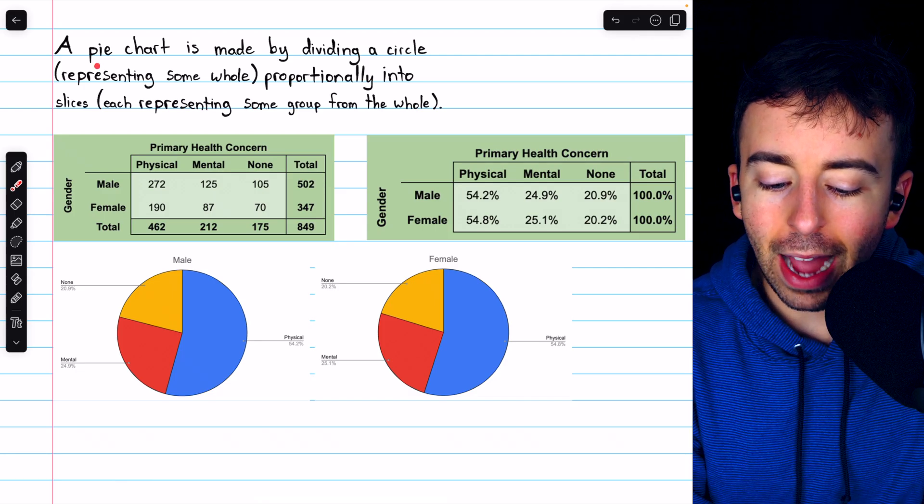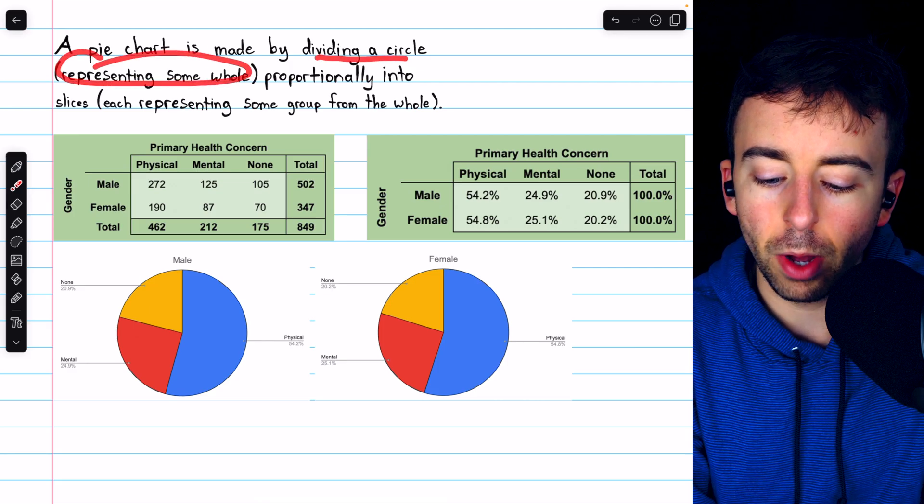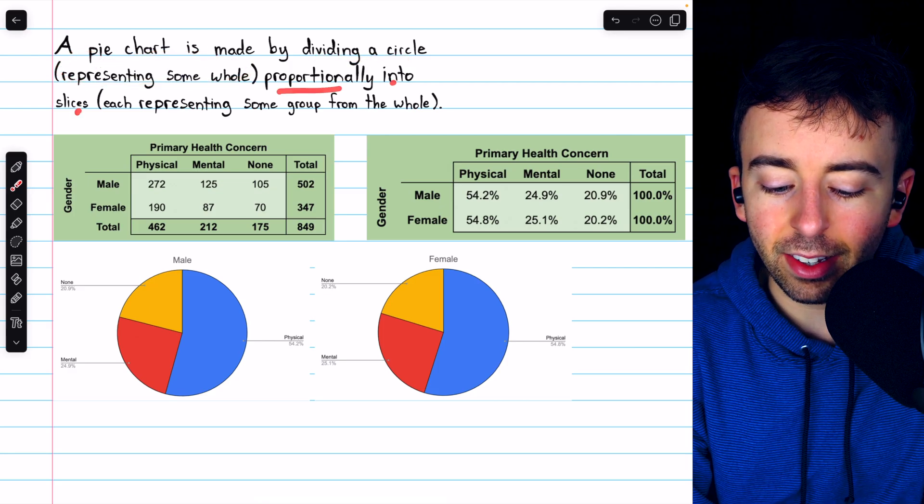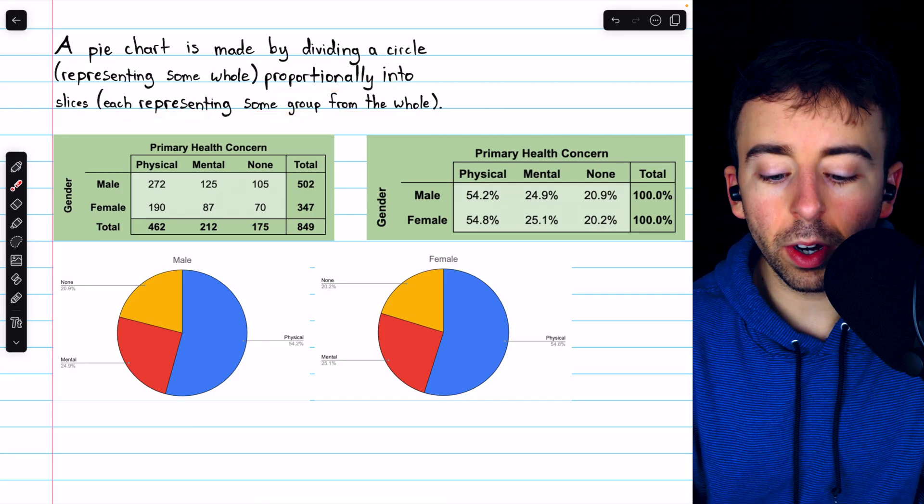As a quick recap, a pie chart is made by dividing a circle, which represents some whole, proportionally into slices, which each represent some group from the whole.